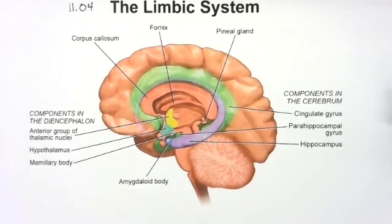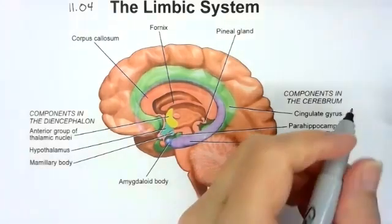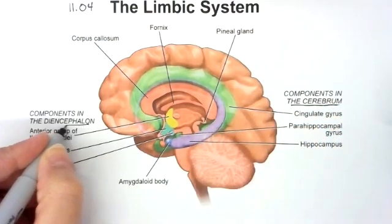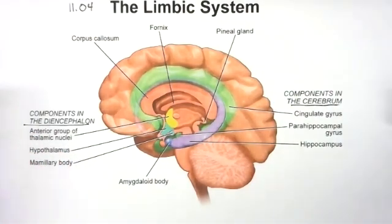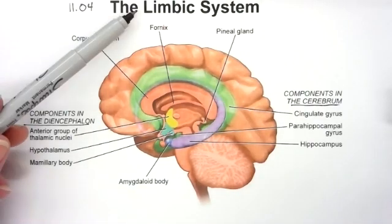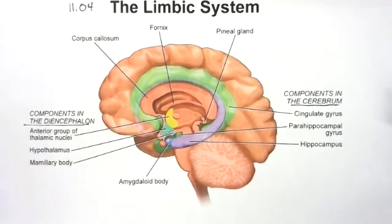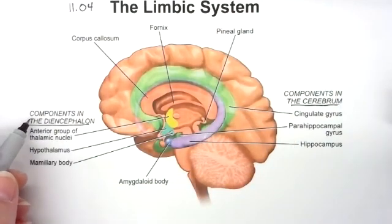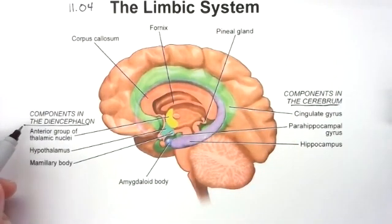The next section, as we're working our way from the outside of the brain down to the inside, is the limbic system. We've talked about the cerebrum, and the next section we're going to talk about is the diencephalon. We may put that into this video depending on how long it is. The limbic system is kind of an arbitrary division because it has components in the cerebrum and components in the diencephalon.